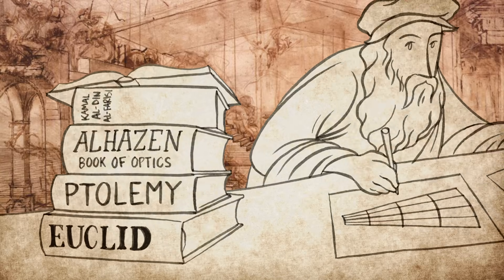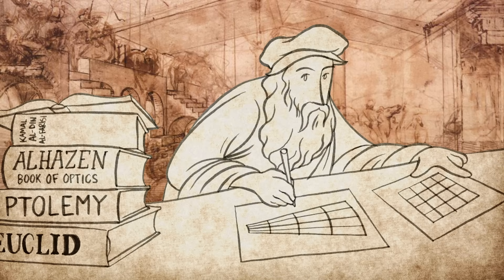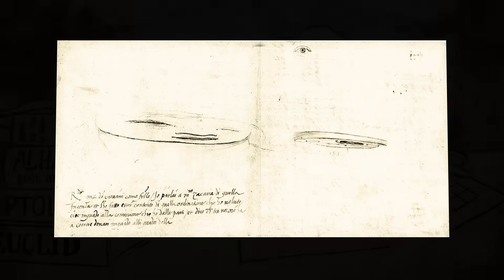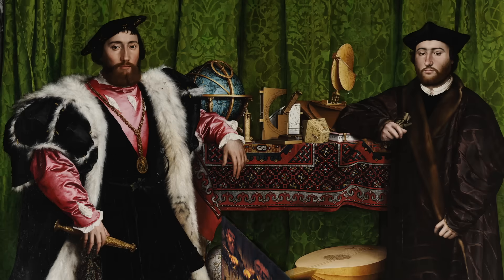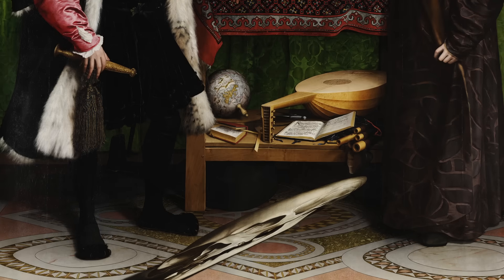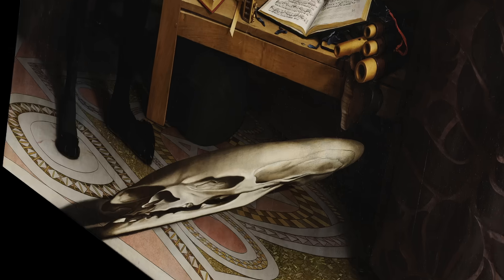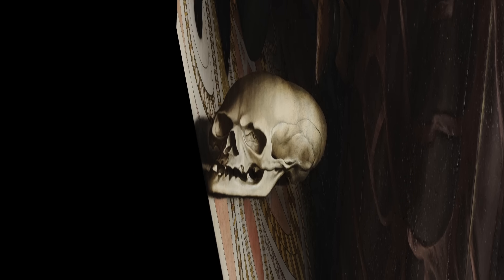In 1485, Leonardo da Vinci manipulated the mathematics to create the first known anamorphic drawing. A number of other artists later picked up the technique, including Hans Holbein in The Ambassadors. This painting features a distorted shape that forms into a skull as the viewer approaches from the side.